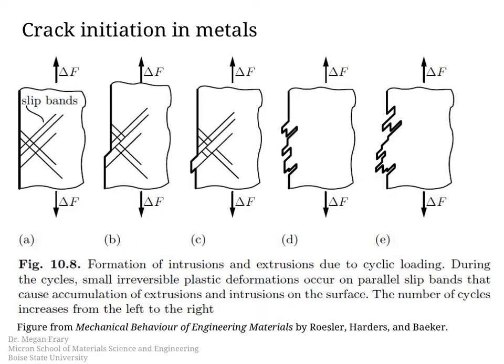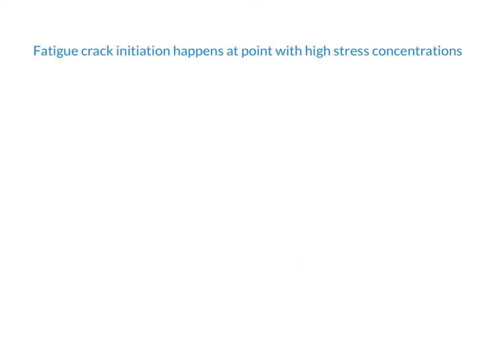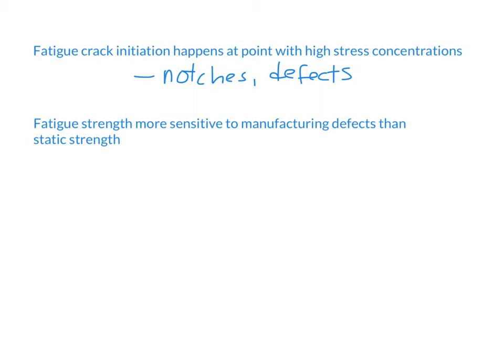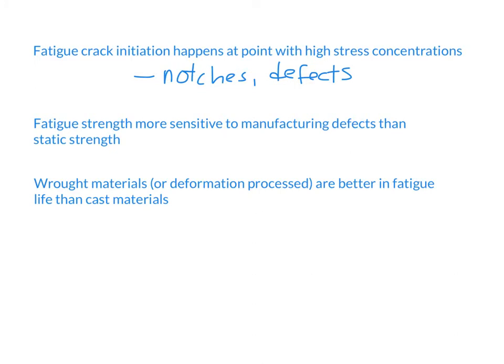Fatigue crack initiation happens at points with high stress concentrations — examples would be notches in the sample or other defects that might be present. As a result, fatigue strength is more sensitive to defects in manufacturing than static strength is, because the cyclic loading process can lead to initiation of cracks if defects are present. Rolled or drawn materials are better in fatigue life than cast materials, because the number of defects will be smaller.